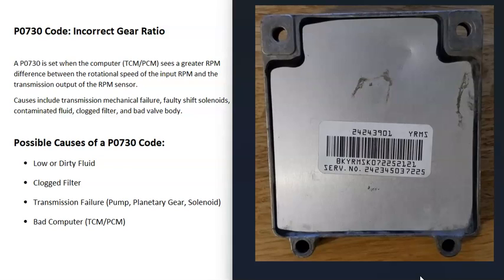If you suspect a computer issue, make sure your battery is good and that the alternator is charging correctly — not overcharging or undercharging — since all computer modules need a stable power supply. Also verify they have a good ground wire, because a poor ground can cause computers to behave strangely. You can test for a ground issue by using a jumper wire from the computer to a known good ground and seeing if the problem clears up. Again, a bad computer isn't too common, but it's the last thing to consider.